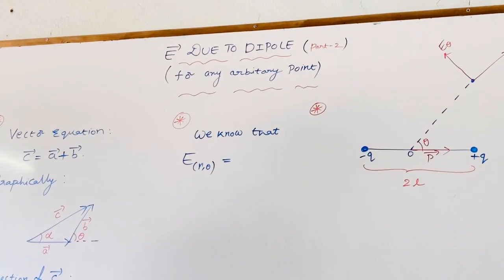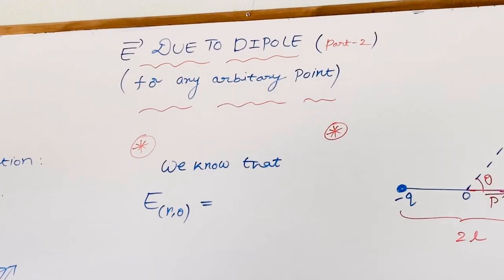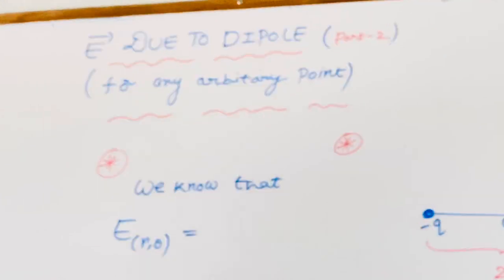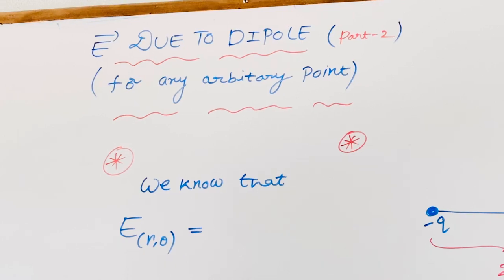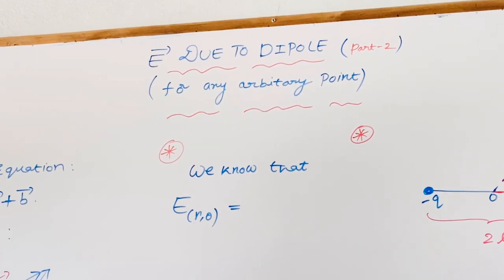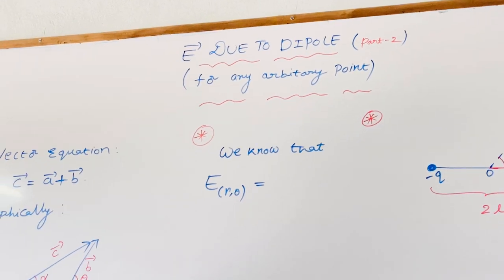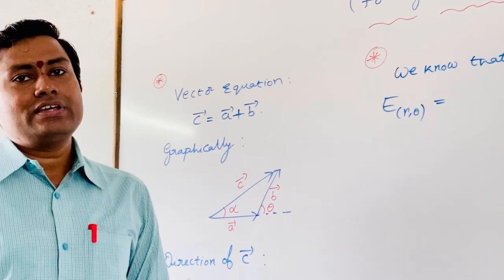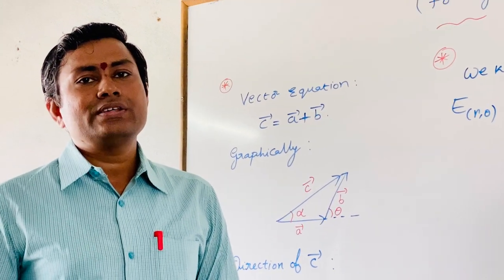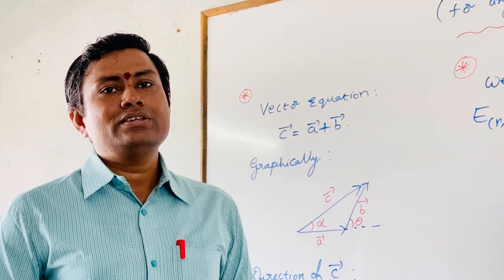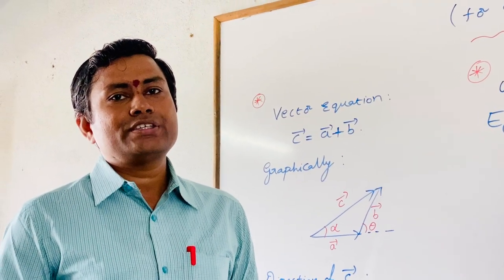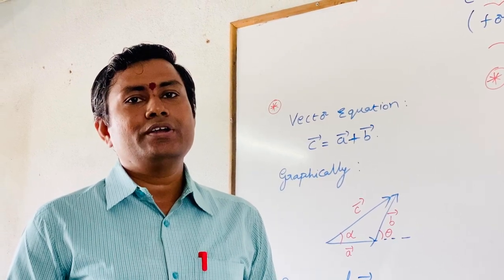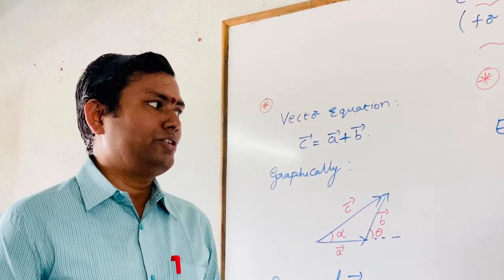In the last session, we derived the magnitude of the electric field. Now in this session, we will find out the direction of the resultant electric field at any arbitrary point due to the dipole, as well as we can see two important cases arising from this expression of the electric field due to the dipole at any arbitrary point.